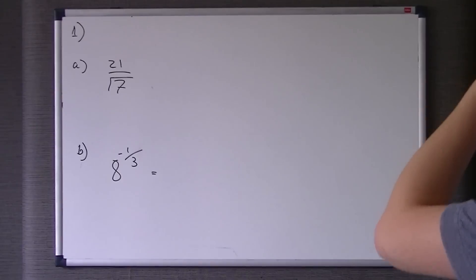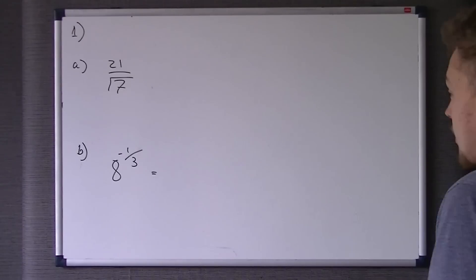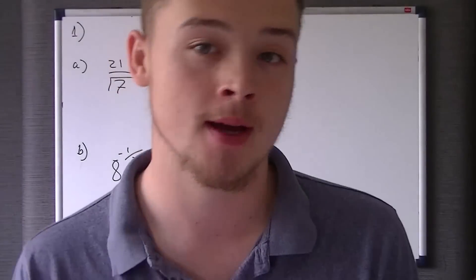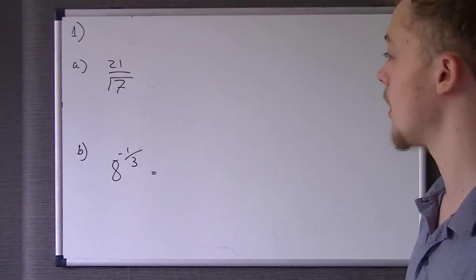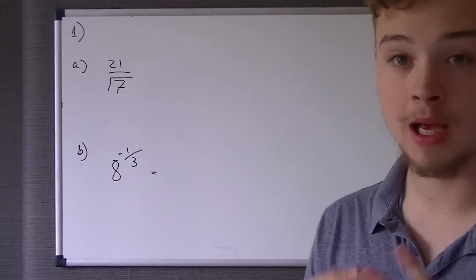The first one, we're told it's 27 over the square root of 7, and we're asked to put it in the form k root 7, where k is some integer. So how are we going to do that? Well, you have to remember...